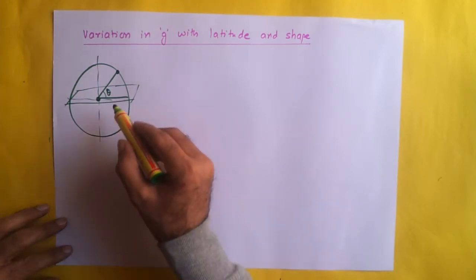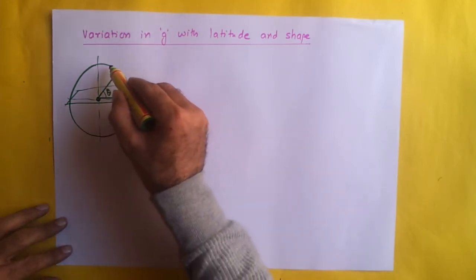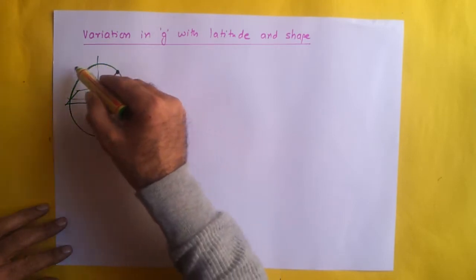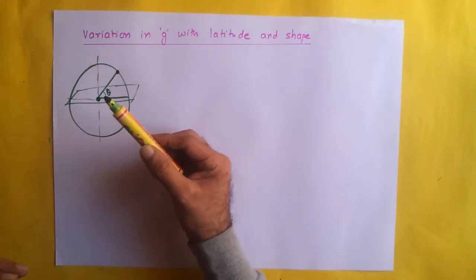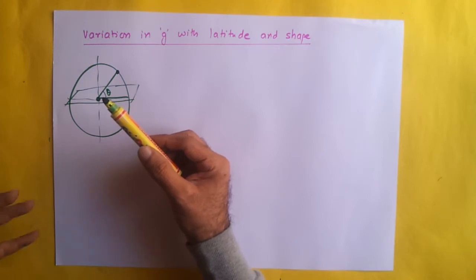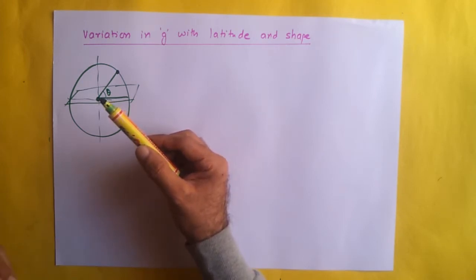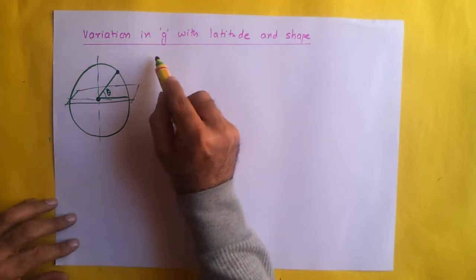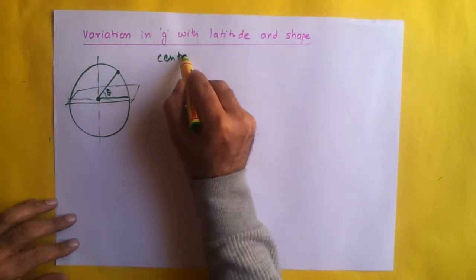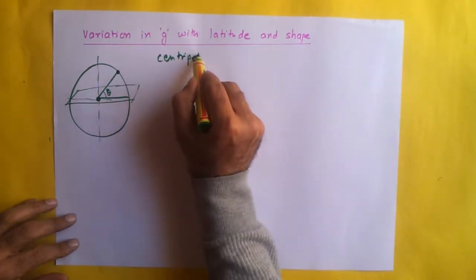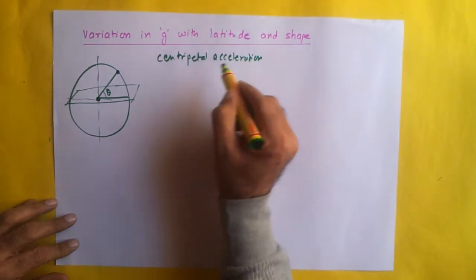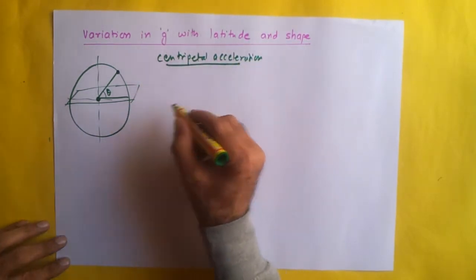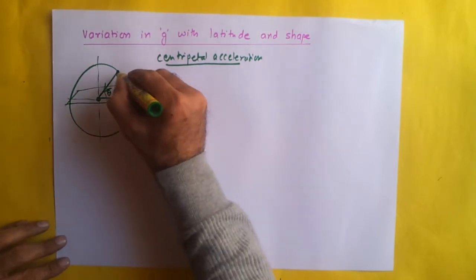The objects on the surface of the earth are performing rotational motion because the earth is rotating. We know that a body which moves in a circle, any object which is moving in a circle has a centripetal acceleration. We know that if an object is performing circular motion along a circular path, it has centripetal acceleration which is directed towards the centre of the circle.